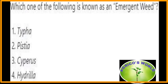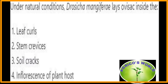Which one of the following is known as an emergent weed? Typha is known as an emergent weed. Under natural conditions, Drosicha mangiferae — the mango mealybug — lays its ovisac inside soil cracks.